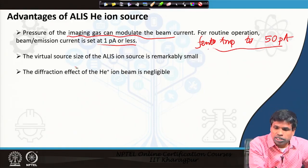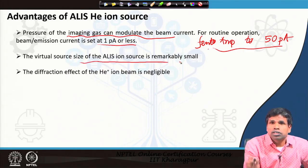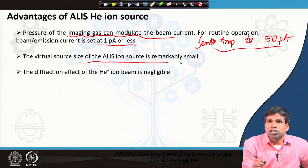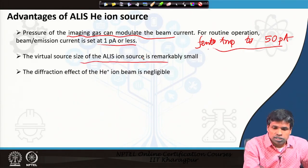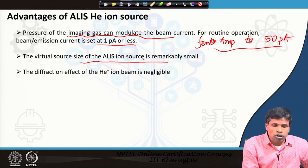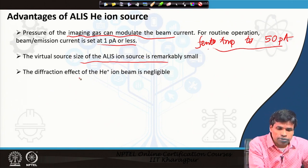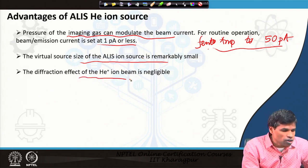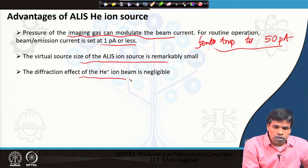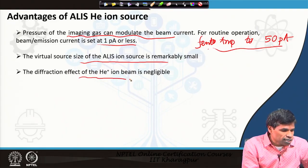The virtual source size is remarkably small because we use only the trimer — 3 atoms at the tip. Moreover, the diffraction effect of the helium ion beam is also very negligible.